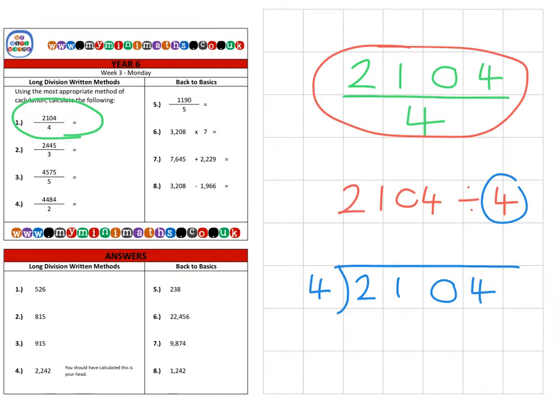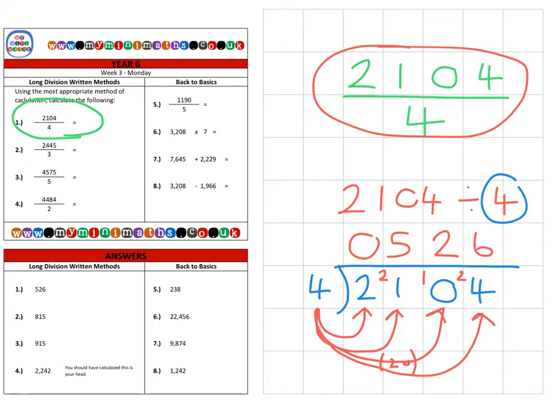The first thing we need to do is how many fours fit into the two? Well, we can't fit any, so we put a zero and carry the two over to the hundreds column. Then how many fours fit into 21? That goes five, which would be 20, leaving one left over which we carry to the tens column. Then how many fours fit into 10? That would be two because that would be eight, leaving two as a remainder. We carry that over to the units, and then fours into 24 go six for a final answer of 526.